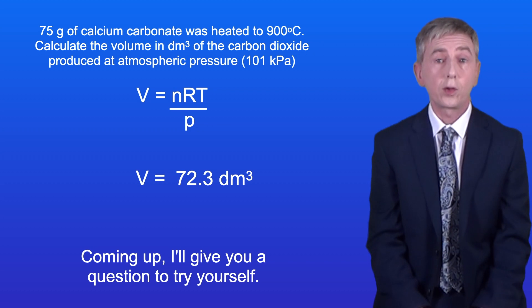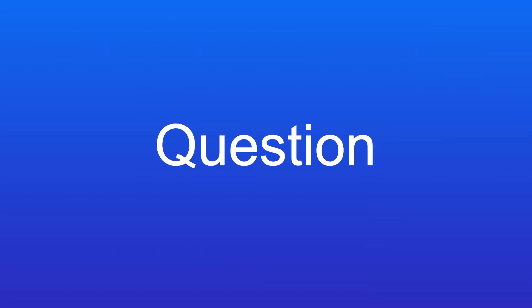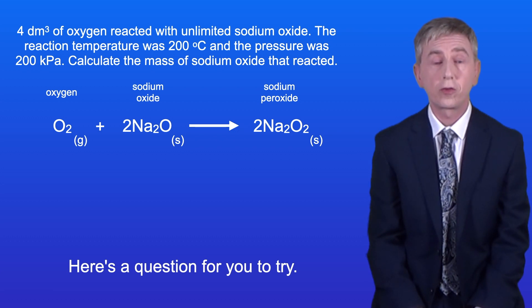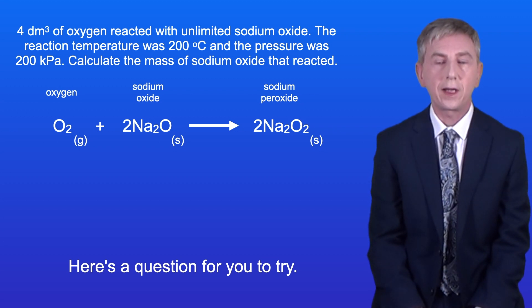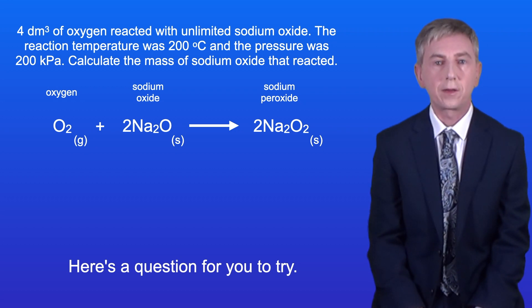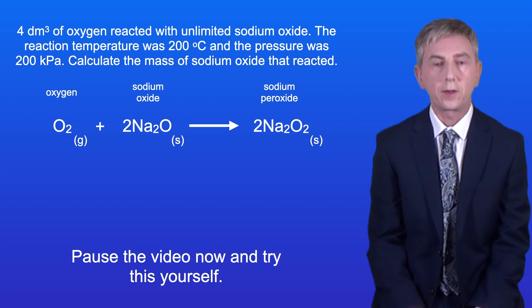Coming up I'll give you a question to try yourself. Here's a question for you to try. 4 decimetres cubed of oxygen reacted with unlimited sodium oxide. The reaction temperature was 200 degrees Celsius and the pressure was 200 kilopascals. Calculate the mass of sodium oxide that reacted. Pause the video now and try this yourself.